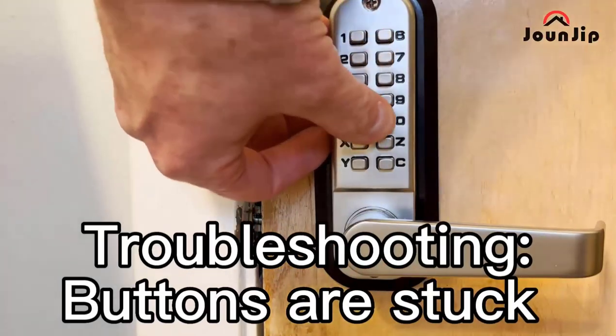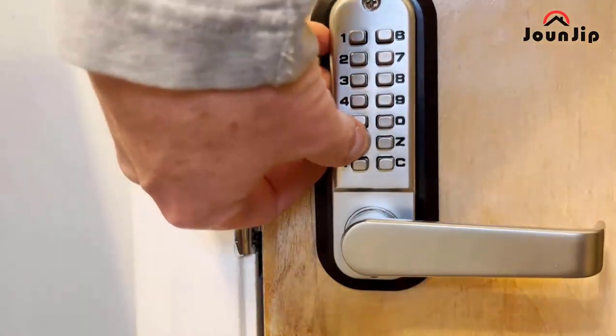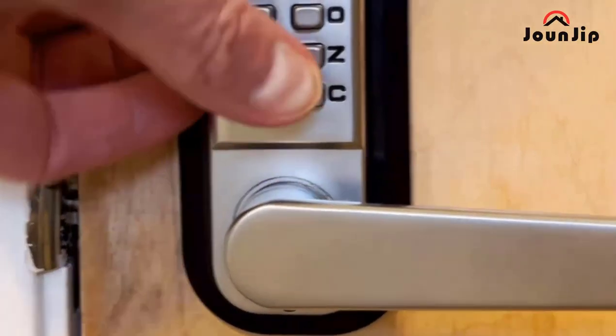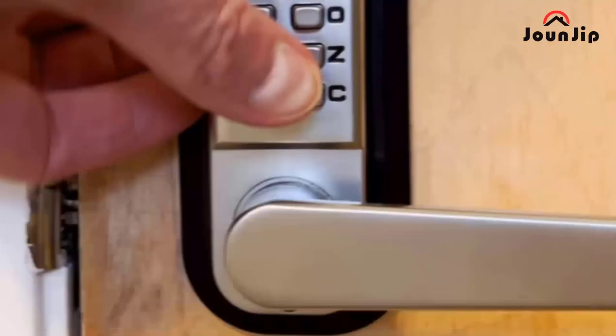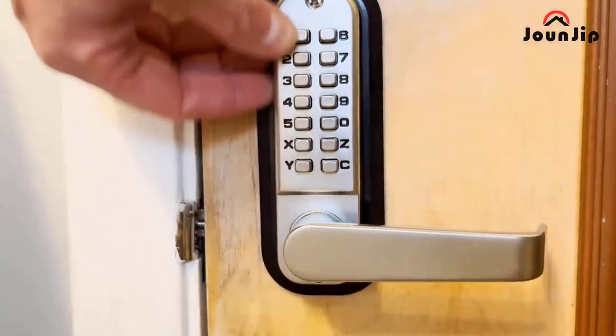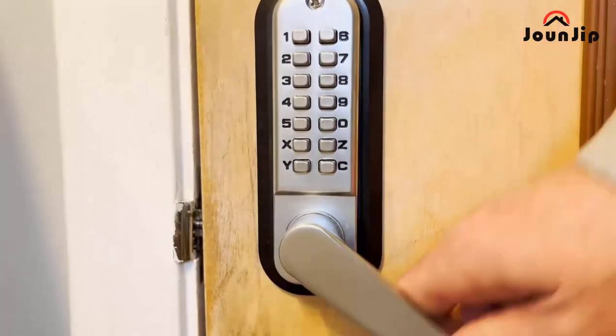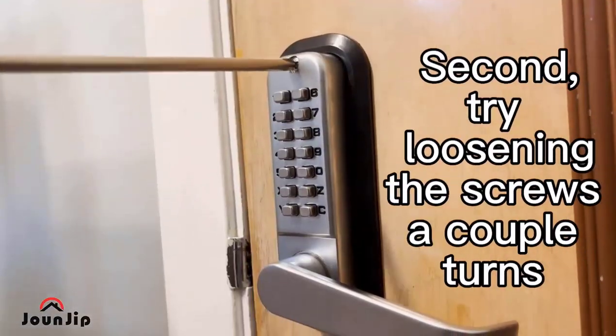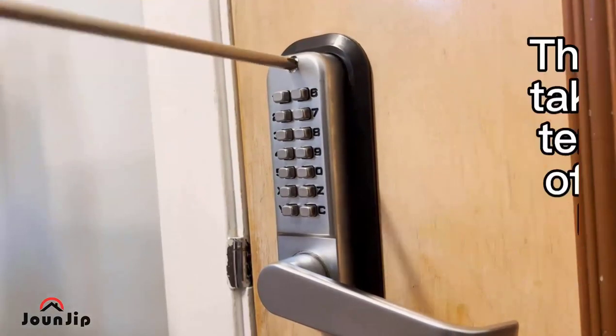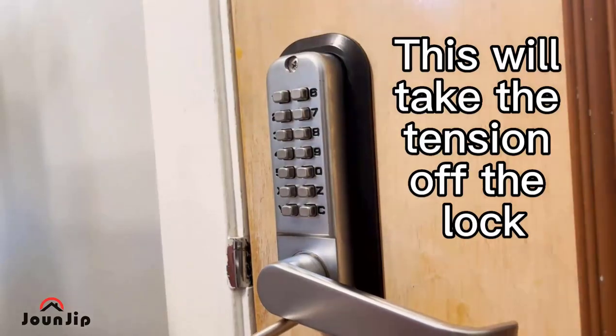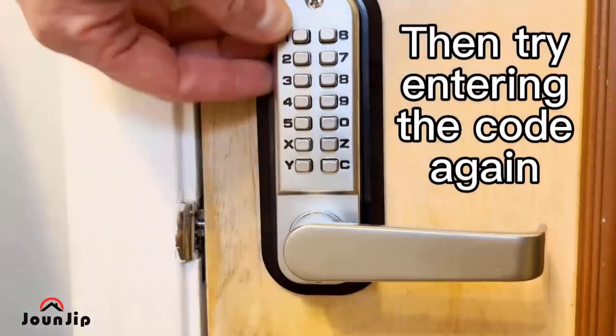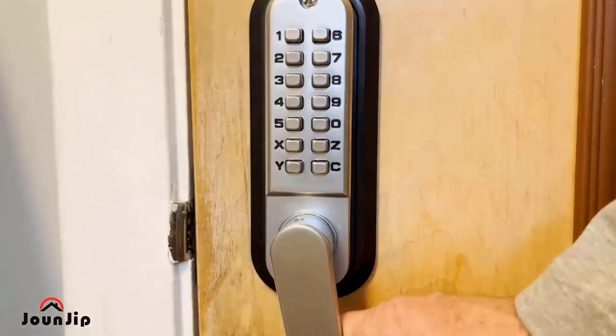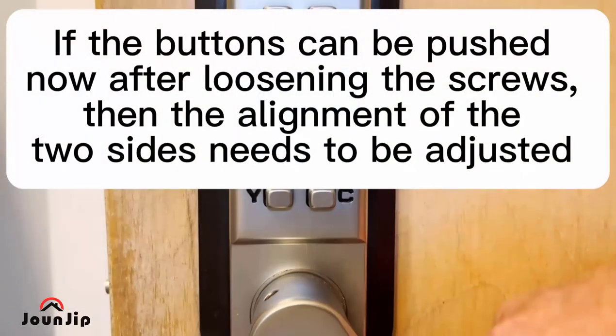Number fifteen: troubleshooting buttons that are stuck. First, make sure to press the C button to clear it every time before entering the code. Second, try loosening the screws a couple turns. This will take the tension off the lock. Then try entering the code again. If the buttons can be pushed now after loosening the screws, then the alignment of the two sides needs to be adjusted.